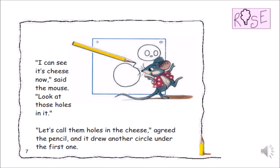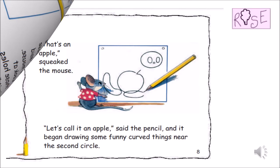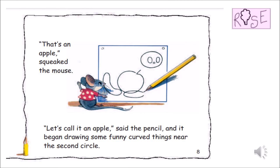And it drew another circle under the first one. That's an apple, squeaked the mouse. Let's call it an apple, said the pencil. And it began drawing some funny curved things near the second circle.